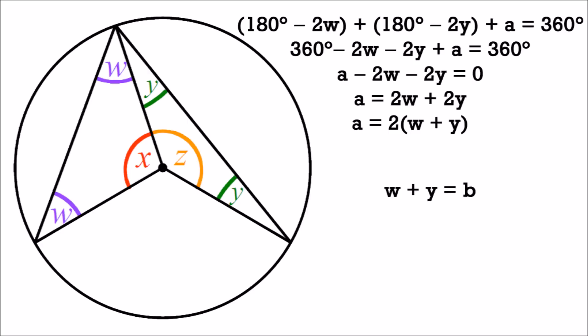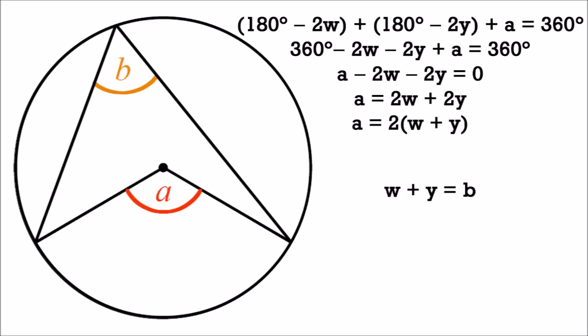Using the fact that w plus y equals b, we can conclude that a equals 2b, and have proven that the angle subtended by an arc at the centre of a circle is twice the angle subtended at any point on the circumference.